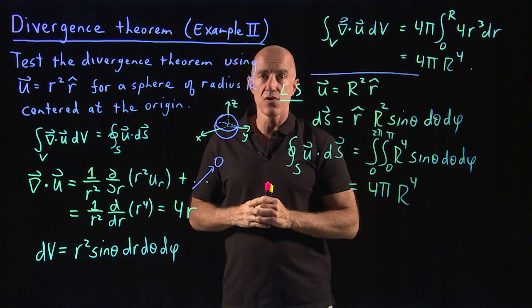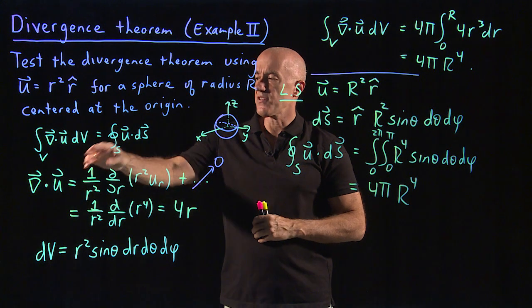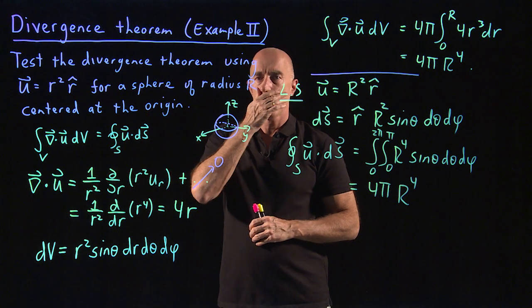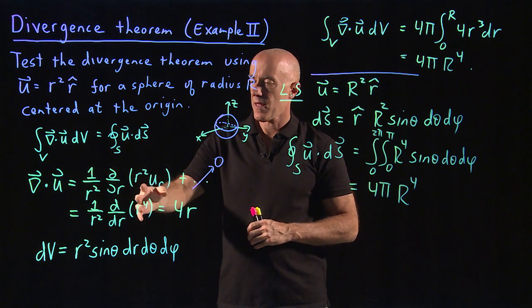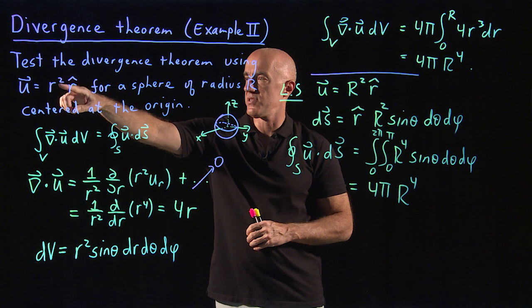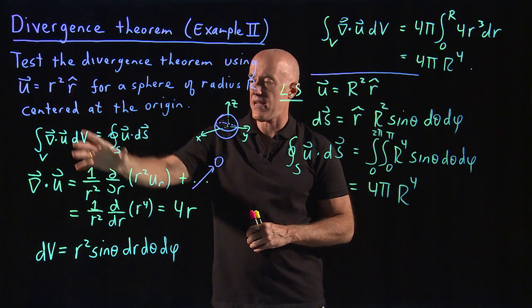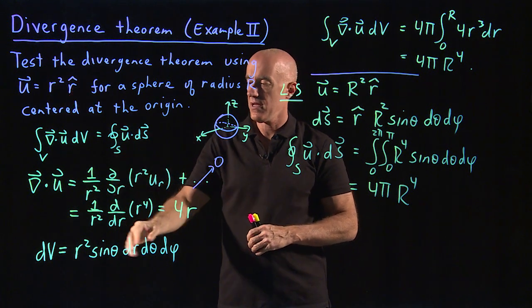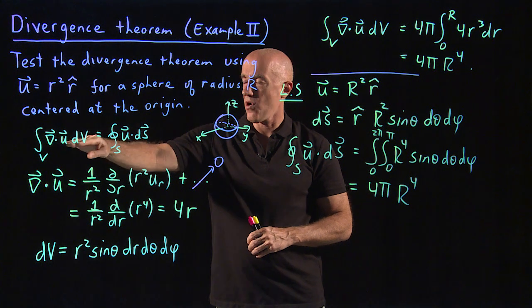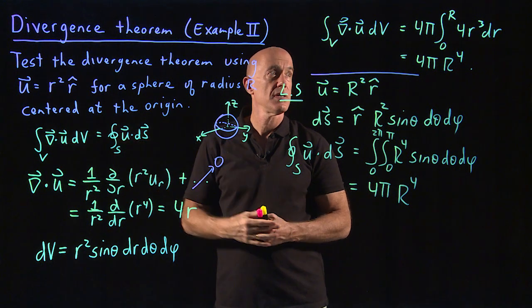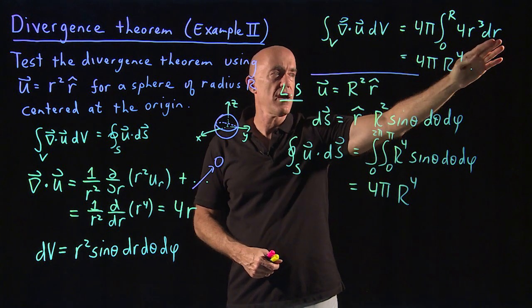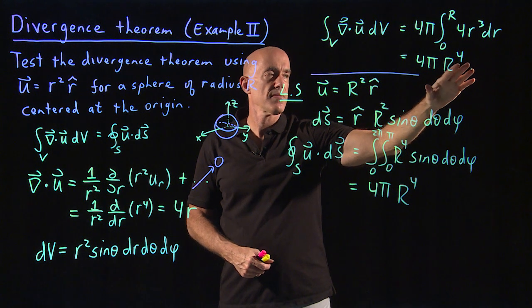We're doing spherical coordinates now. We have to pull the divergence of u in terms of spherical coordinates. You don't remember this, you look it up. There's only the first term because u just depends on u sub r, r hat. So you only have the first term contributing. And then you can calculate it, that's 4r. Then we need to integrate 4r over the volume. The angular part will give you 4π, and then you have an integral over r, which gives you R to the fourth.